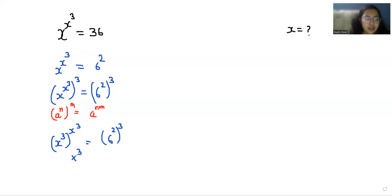So it becomes a^a = 6^(2×3) = 6^6. If I'm going to use exponent rules, now if we compare the value of a, it is 6.